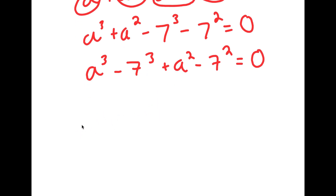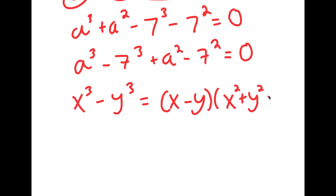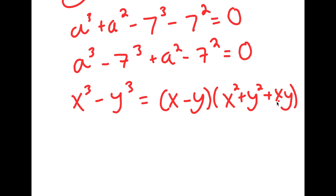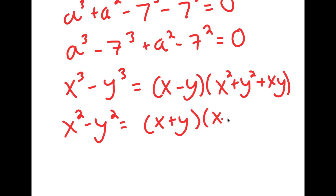Now here are two properties that we're going to use. If I have something in the form x to the power of 3 minus y to the power of 3, this is equal to x minus y times x squared plus xy plus y squared. And if I have something in the form x squared minus y squared, this is equal to x plus y times x minus y.